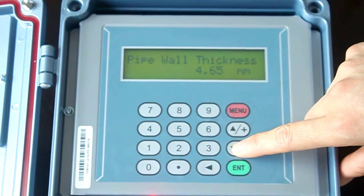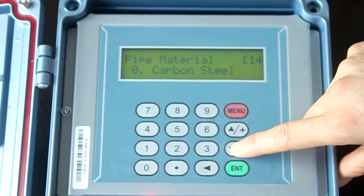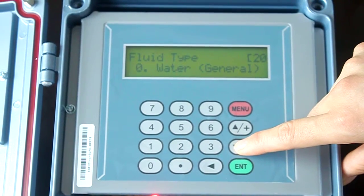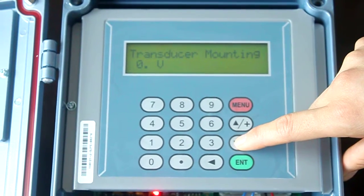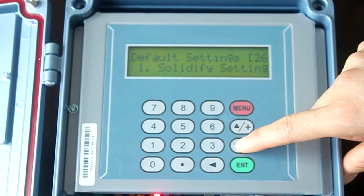This is pipe wall thickness. Pipe inner diameter. Pipe material. Line material. Fluid type. Transducer type. Transducer mounting. Transducer spacing. Default settings.